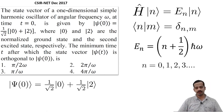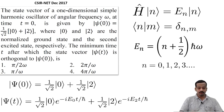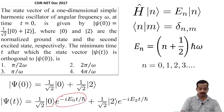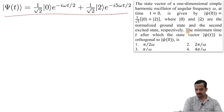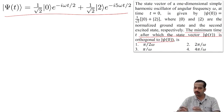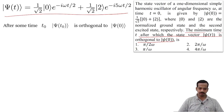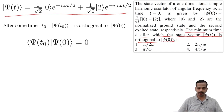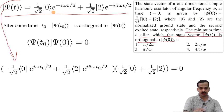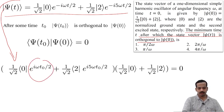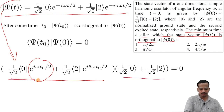The initial state is already written in terms of energy eigenstates. The state at later time t can be written by multiplying e to the power minus i E-0 t over h-bar with |0>, and e to the power minus i E-2 t over h-bar with |2>. When we substitute E-0 and E-2, we end up with this state. Now, we want the minimum time t-0 such that psi(t-0) is orthogonal to psi(0), meaning the inner product between them vanishes.